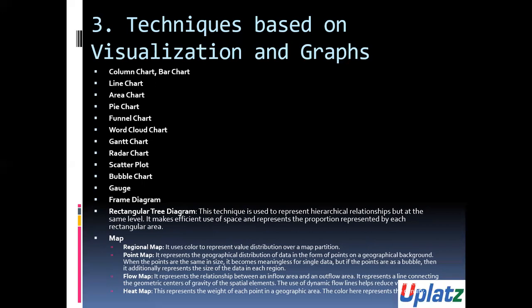Then we have frame diagram, which is a visual representation of the hierarchy in the form of an inverted tree structure. Then we have rectangular tree diagram. This technique is used to present hierarchical relationships at the same level. It makes efficient use of space and represents the proportion represented by each rectangular area.